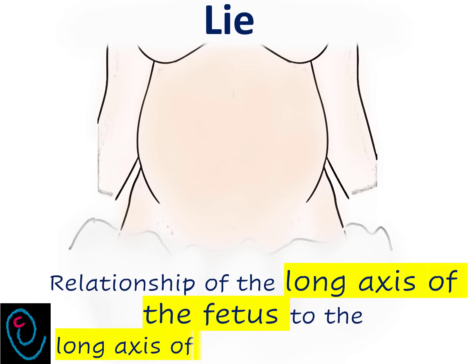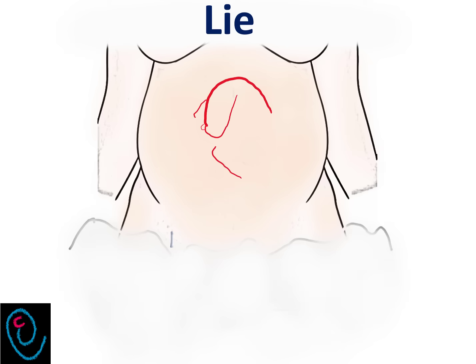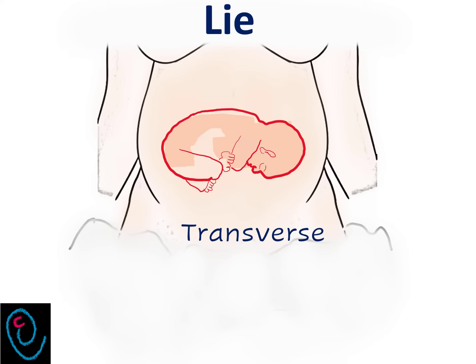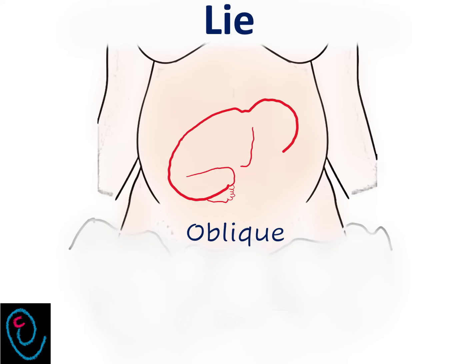Lie is the relation of the long axis of the fetus to the long axis of the maternal spine. Most commonly, it is a longitudinal lie. However, it may be transverse or oblique.